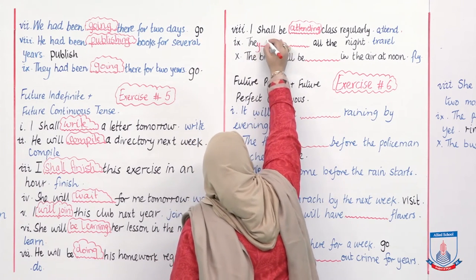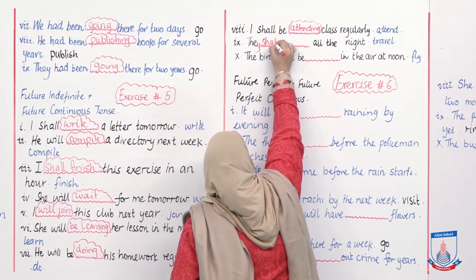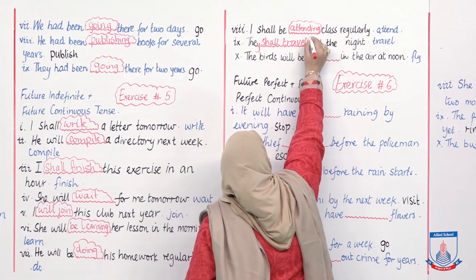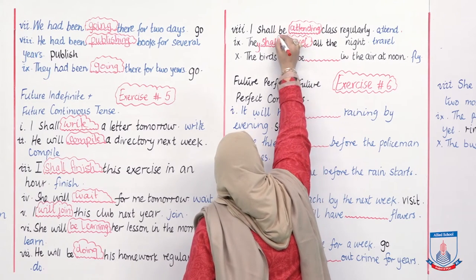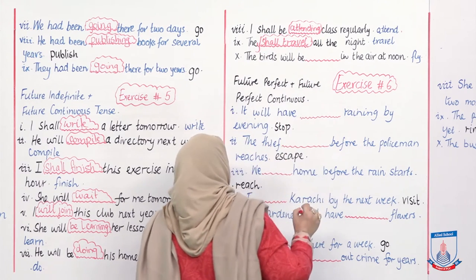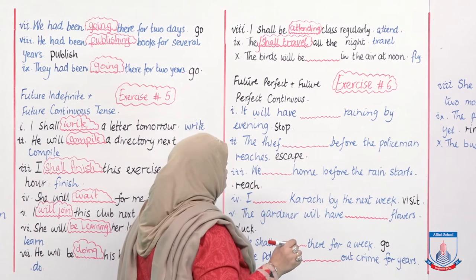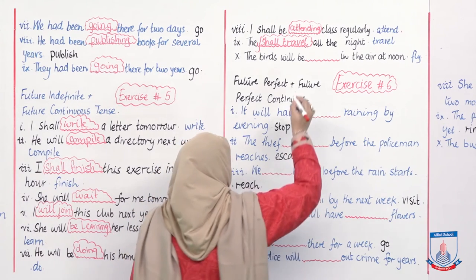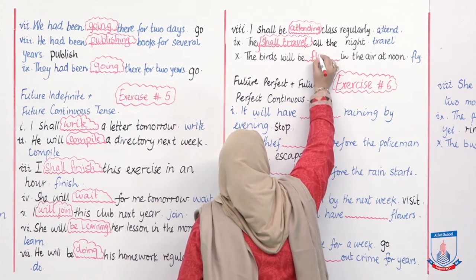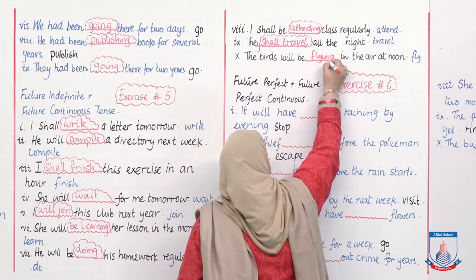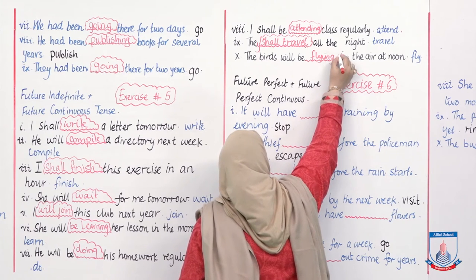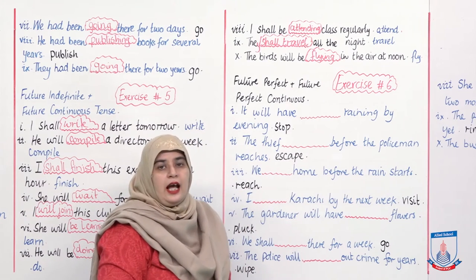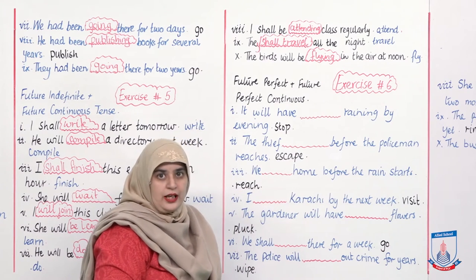'They shall ___ all the night.' Something that they will do the entire night. Answer: 'They shall travel all the night.' Next: 'The birds will be ___ in the air at noon.' They are going to continuously fly. Answer: 'The birds will be flying in the air at noon.'